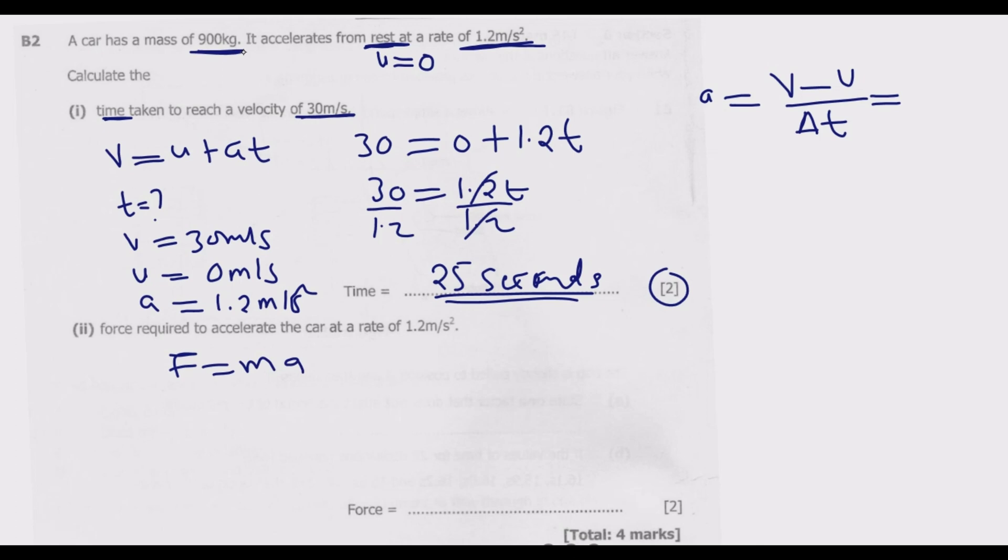This mass should always be in kg. If you are given grams, convert to kg. The common mistake is people forgetting to convert grams to kg. In this case it's straightforward because it's given to us in kg.